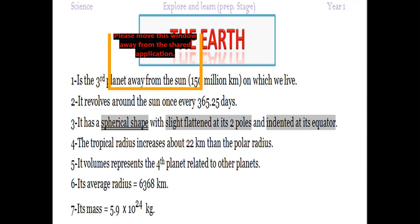The average radius of the Earth is represented by 6,368 kilometers. Its mass equals 5.9 by 10 to the power of 24 kilograms. This is a huge size, of course. Don't forget that planet Earth is considered one of the inner planets, which are smaller in size than the outer planets.